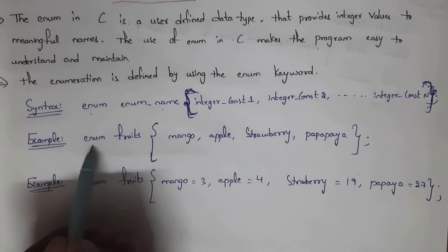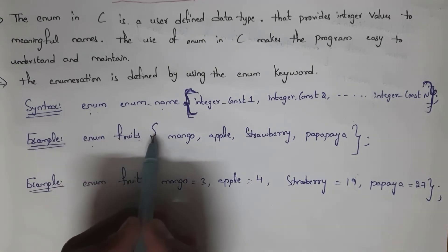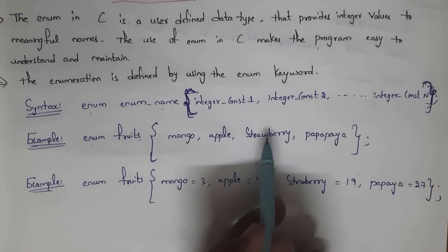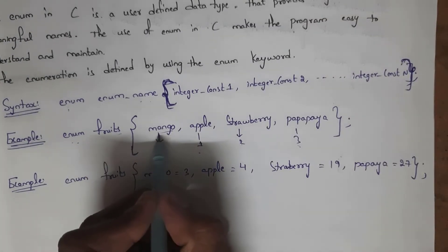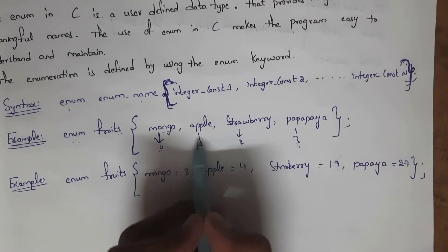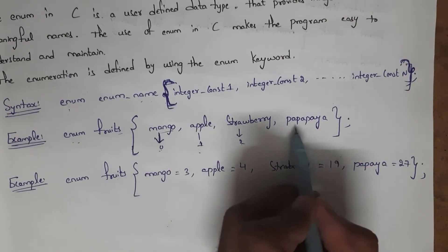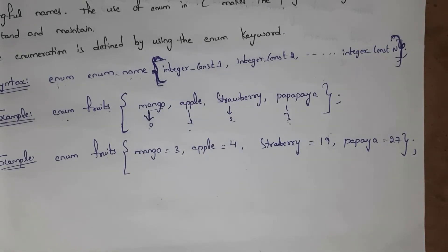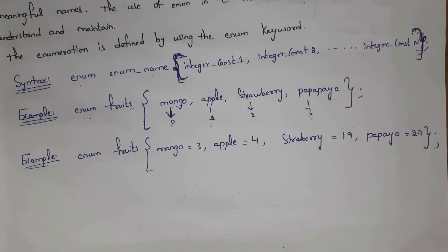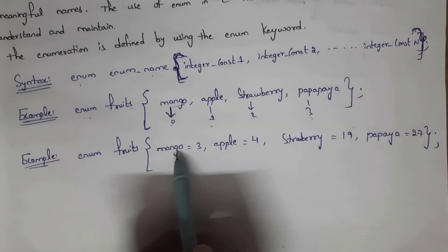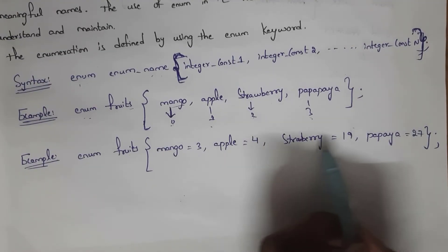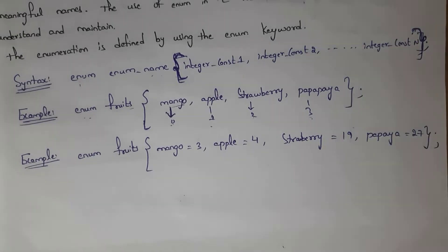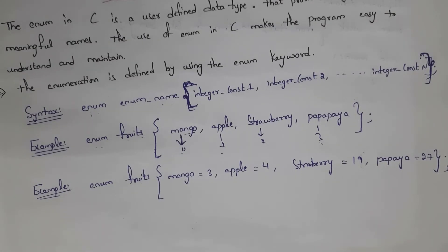Here is an example. I wrote the enum keyword and took the enum name as 'fruits', then inside curly brackets I wrote fruit names: mango, apple, strawberry, and papaya. By default, the starting name takes value 0, so mango is 0, apple is 1, strawberry is 2, and papaya is 3 — giving output 0 1 2 3. If I don't want default values, I can assign custom values: mango as 3, apple as 4, strawberry as 19, and papaya as 27, giving output 3 4 19 27.